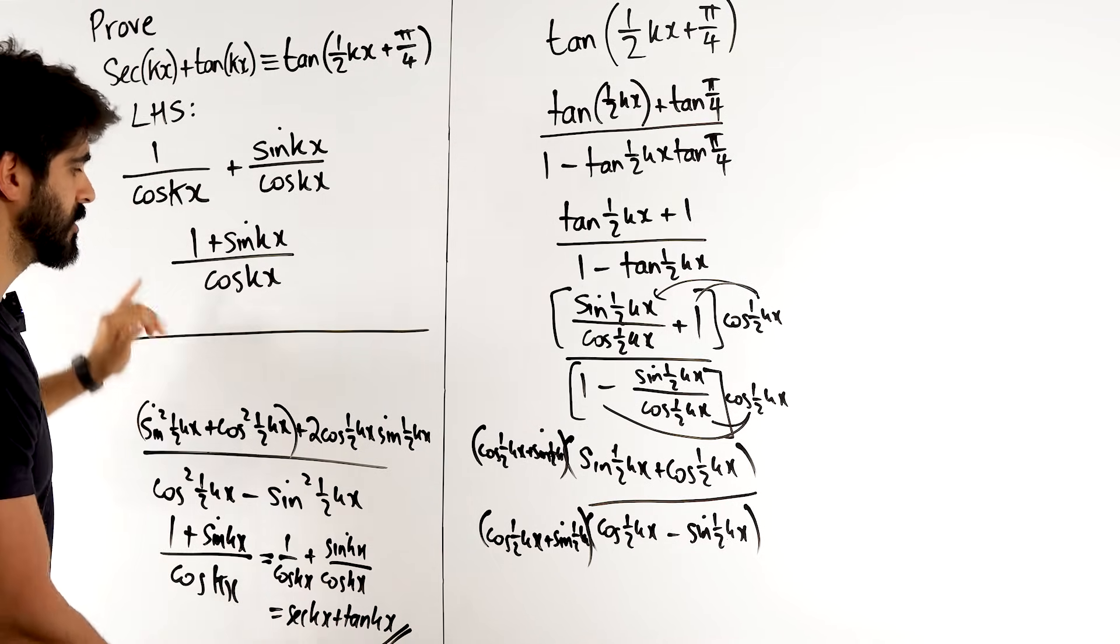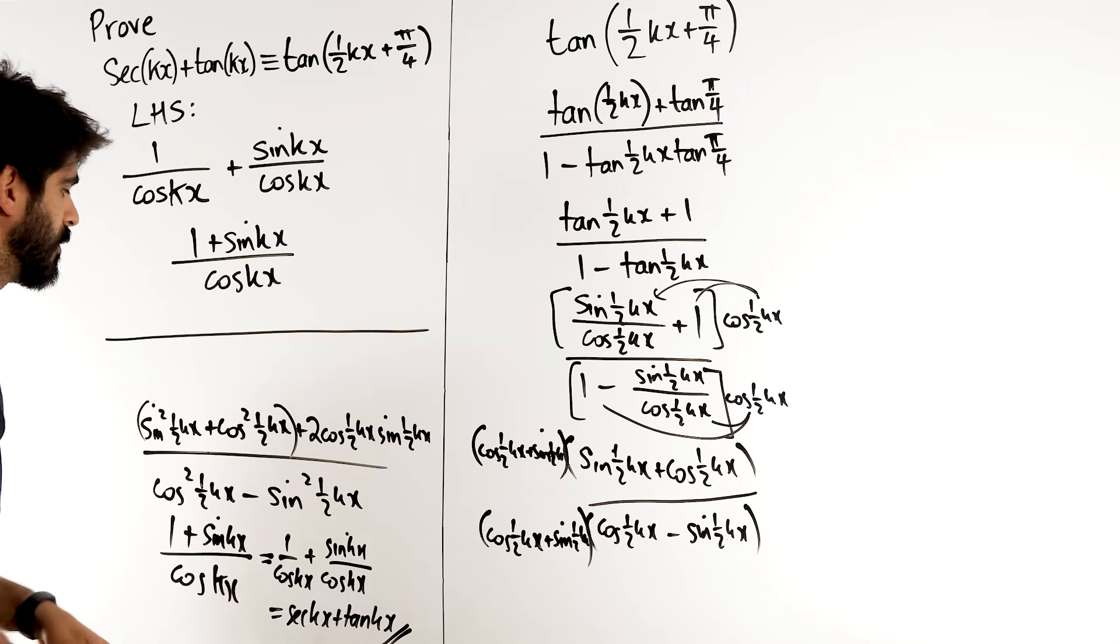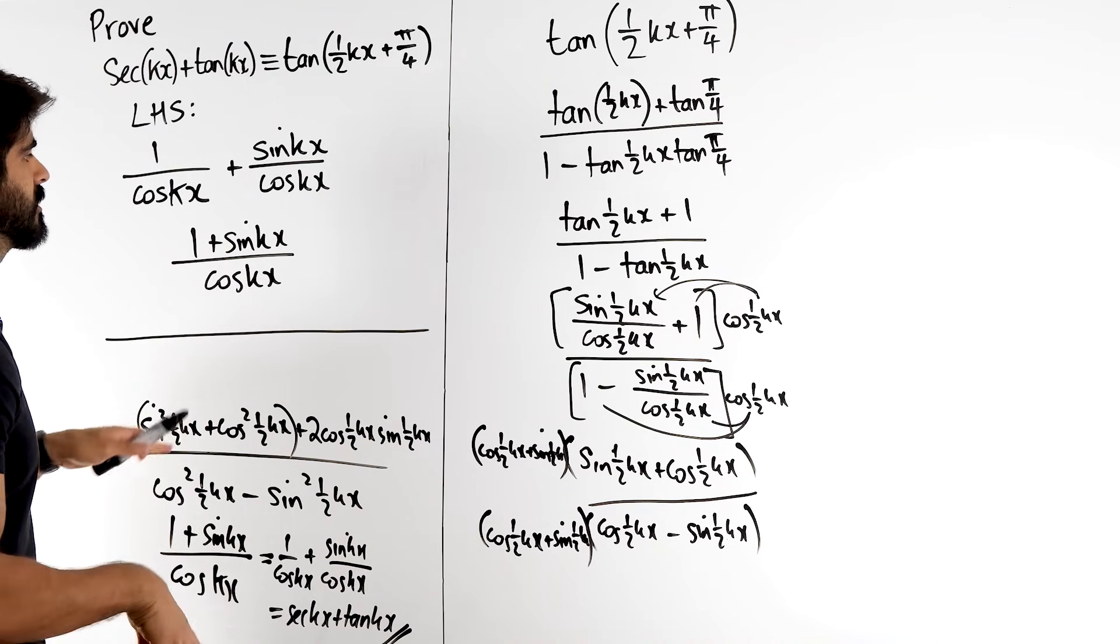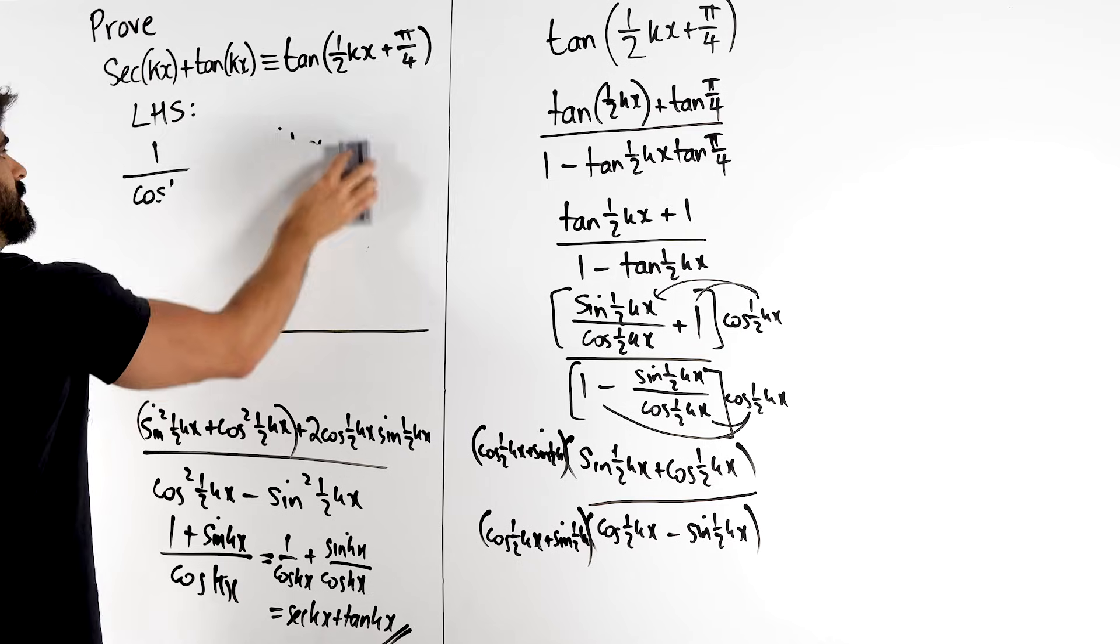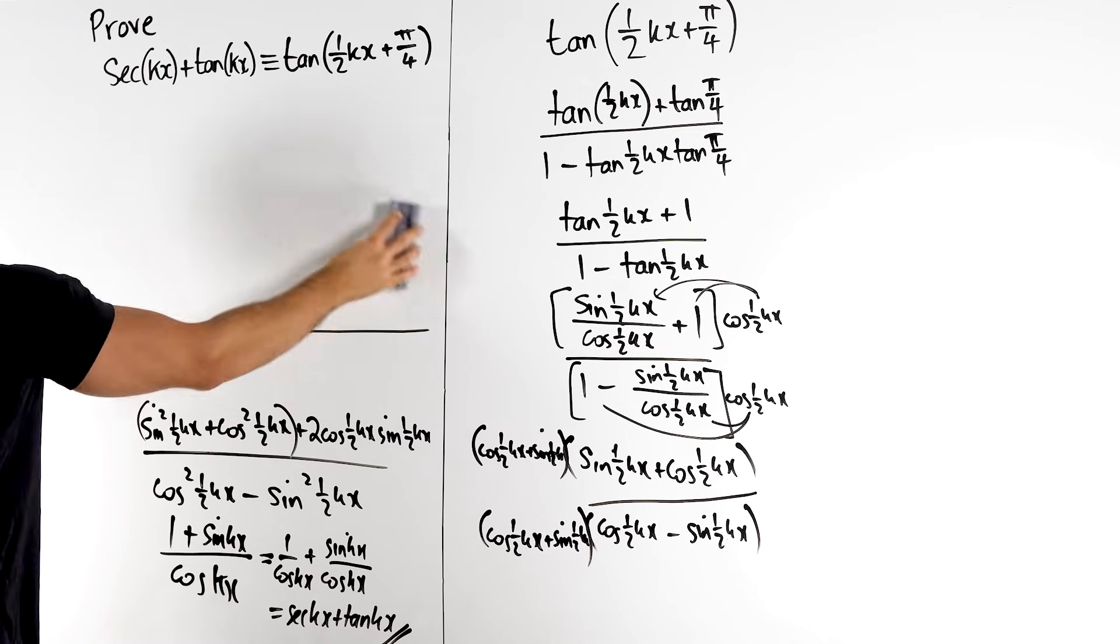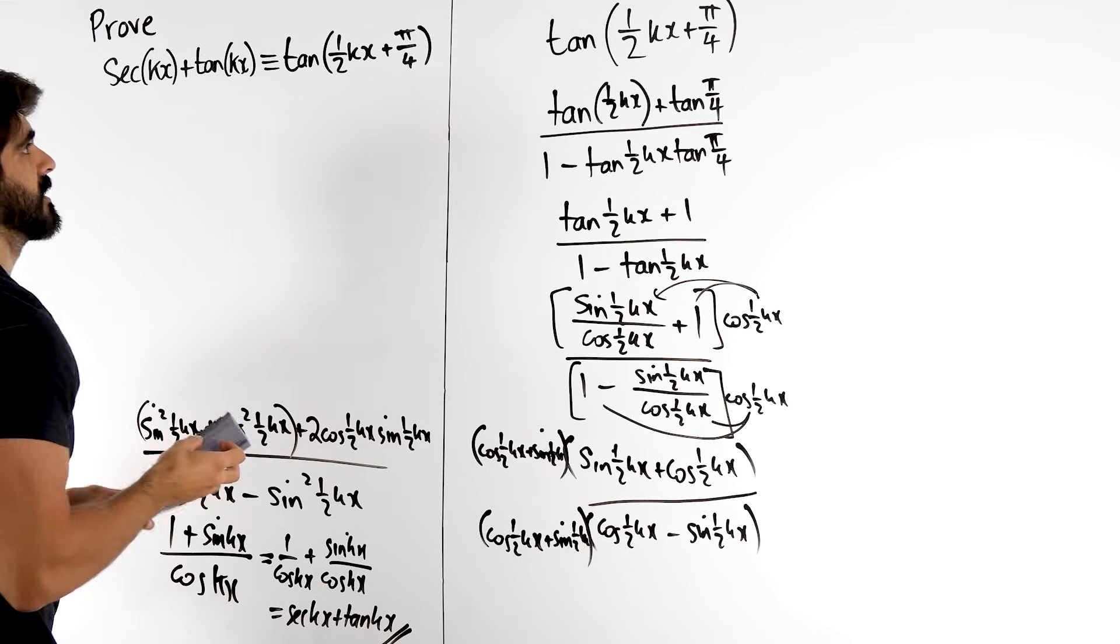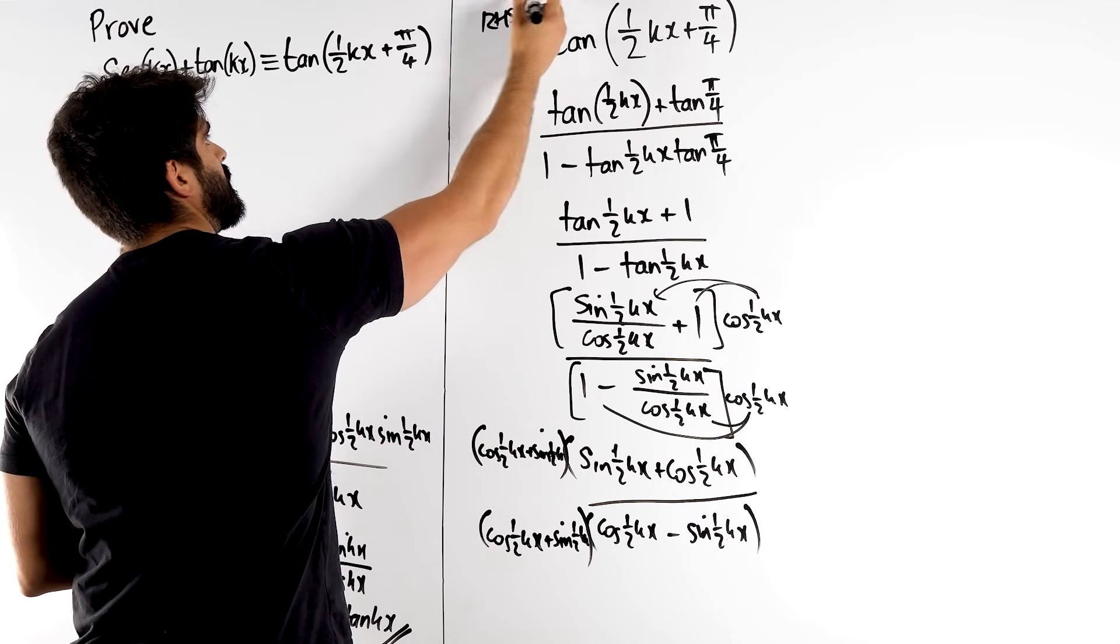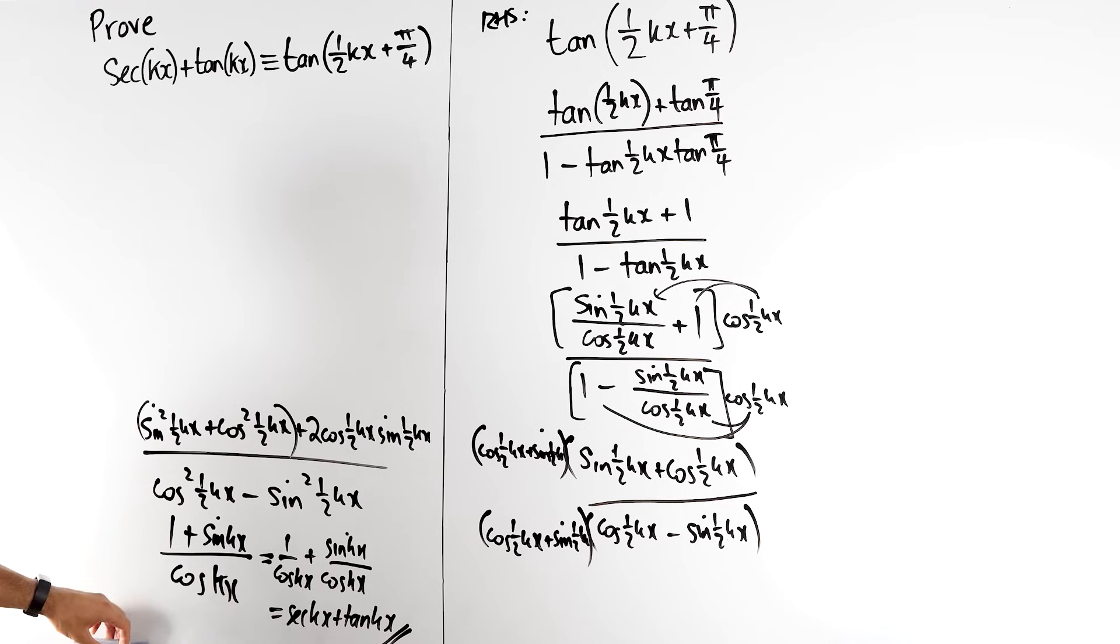So guys, it's very important that you don't just simplify both sides to the same thing. You will not get full marks for that. We manipulated this, realised we were stuck. I would cross it out in the exam, and I would say, actually, I'm going to start again. So this is the kind of no face, no case situation. We started with that side now. We started with the right-hand side, and we simplified it very beautifully down to our solution on the left side.